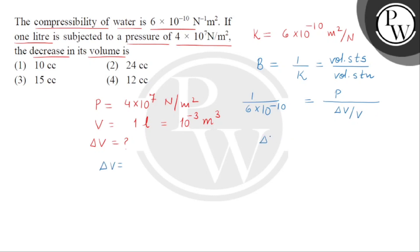From here we get change in volume as PV multiplied by 6 × 10^-10, and the unit assigned will be cubic meter. Now we'll substitute the values.